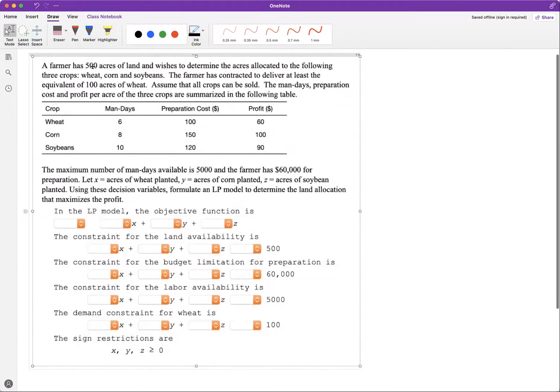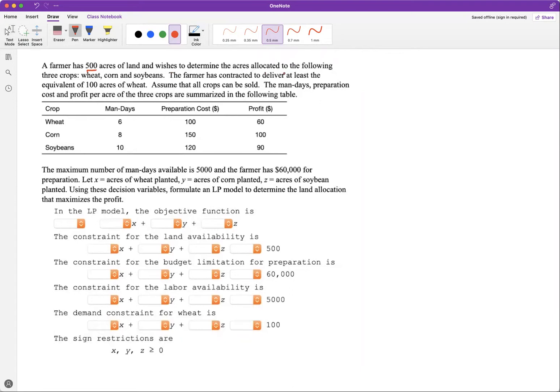Now here in this question we have a farmer who has 500 acres of land and wishes to determine the acreage allocated to three crops: wheat, corn, and soybeans. The farmer has contracted to deliver at least the equivalent of 100 acres of wheat. Assuming that all crops can be sold, the man-days, preparation costs, and profits per acreage are summarized in this table.